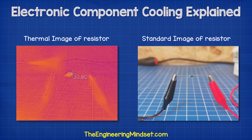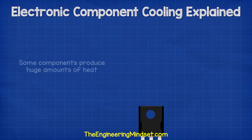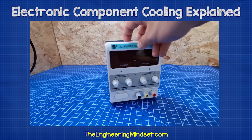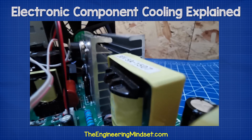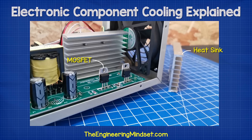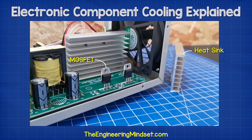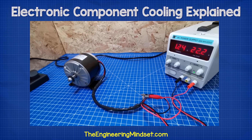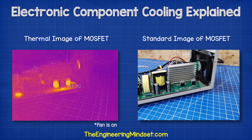That's why when we look at a resistor through a thermal imaging camera, we can see it is generating heat. Some components such as MOSFETs and IGBTs will produce huge amounts of heat. Take this cheap bench power supply for example. It has four MOSFETs inside — two here and two here. If I remove the heat sink and then power a small DC circuit with around 1.2 amps of current, we can see with the thermal imaging camera that these components very quickly reach 45 degrees Celsius.